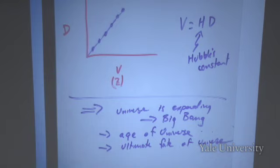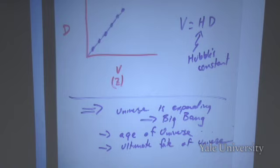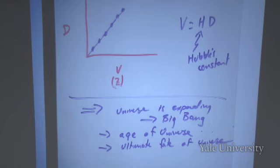This is one of the most profound plots in all of astrophysics, possibly all of science. What this implies is, first of all, that the Universe is expanding — and hence it's the basis for the whole Big Bang Theory of cosmology. By performing relatively simple calculations using Hubble's constant H, you can determine the age of the Universe and the ultimate fate of the Universe. The big question is: will it continue to expand forever, or stop and re-collapse into a Big Crunch?